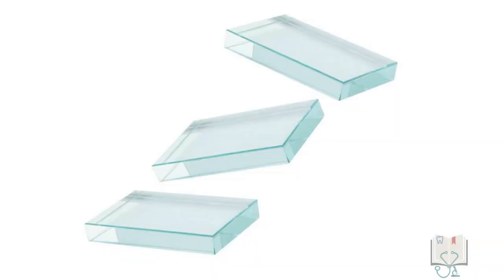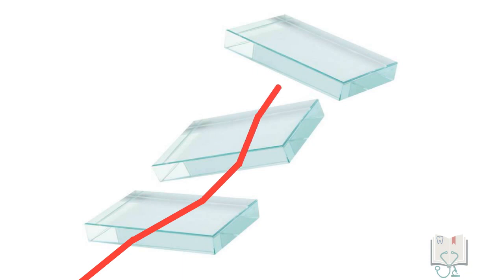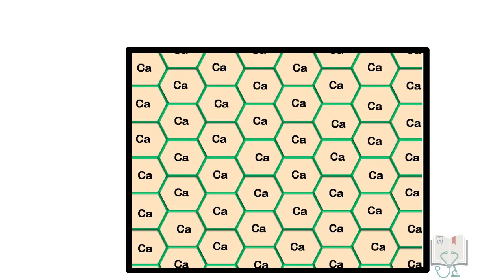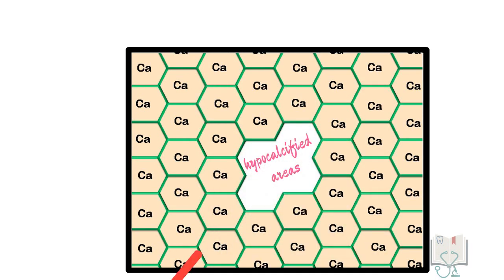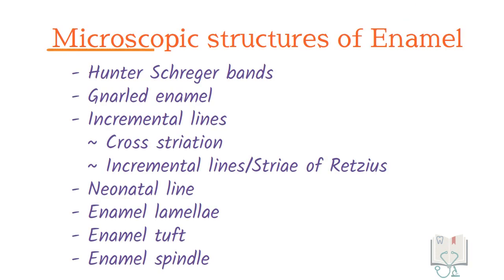This complex orientation of enamel rods refracts the path of light differently and thus presents various microscopic structures. Moreover, in enamel there are a few hypocalcified areas which also refract light and form microscopic structures. So, there are various microscopic structures visible in enamel.